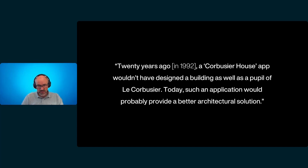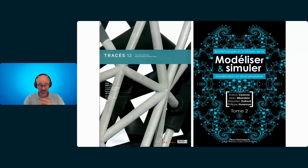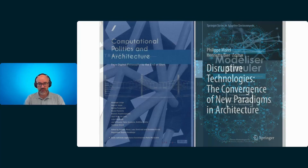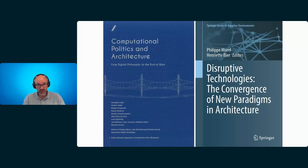In 2012 I was interviewed and said that twenty years ago a smartphone application wouldn't have designed a building as well as a pupil of Le Corbusier. Today such an application would probably provide a better architectural solution. I think this is happening today thanks to artificial intelligence platforms, thanks to generative architectural intelligence. Software now allows more or less anyone to create extremely good architectural solutions. So it redefines the role of the architect, it redefines the economy of architecture, and it redefines the role of disruptive technologies in architecture.